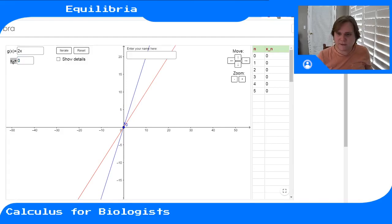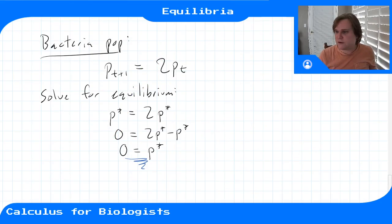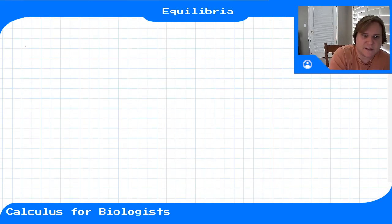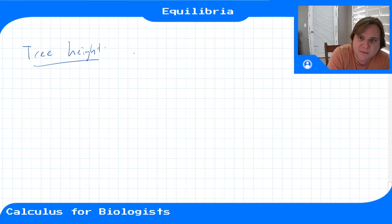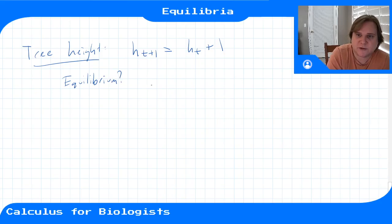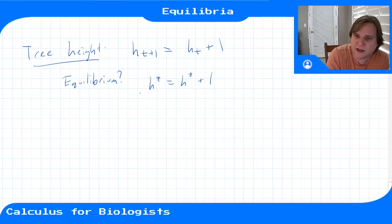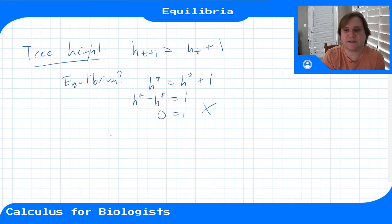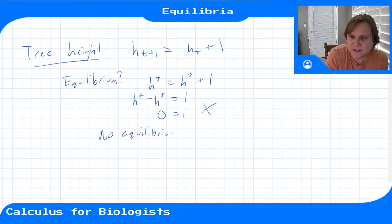Let's do one last example: the tree height problem. From the cobwebbing last time we saw it had no equilibrium point. The model was h(t+1) = h(t) + 1 — next year's height equals this year's height plus one meter. Solving for equilibrium: h* = h* + 1, so h* − h* = 1, giving 0 = 1, which doesn't make sense. There is no equilibrium possible.